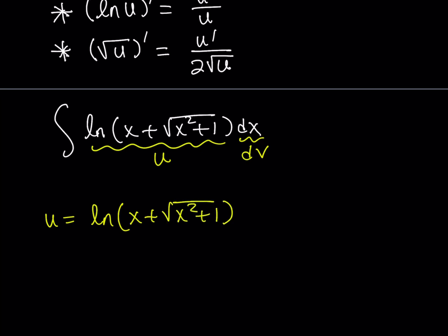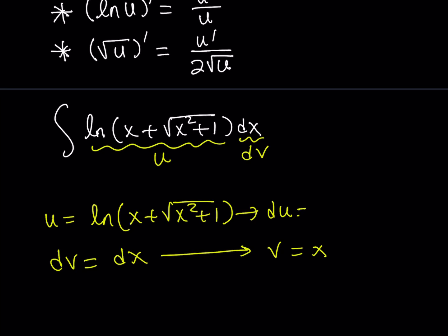From here, I'm going to find du, and then I'm going to put my dv here. dv is dx, and from here I'll calculate v. This is fairly easy — if you just integrate both sides and forget about the constant for now, v equals x. Let's go ahead and calculate du in a separate place and then put it together, because I want to be able to simplify it first.